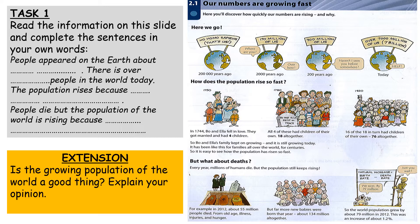There's a little example here of Bo and Ella. In 1744, Bo and Ella got married and had four children. All of those children had children of their own, so those four children had a further 18 children between them. 16 of the 18 children had their own children, and that made 76. So just from two people, from 1750 to 1820, there was a huge increase in numbers of that family. But what about the deaths? Every year millions of humans die, unfortunately, but the population still keeps rising. This must mean that more babies are being born — the birth rate is higher than the death rate — so more babies are being born every year than people are dying, which means the population grows year on year.